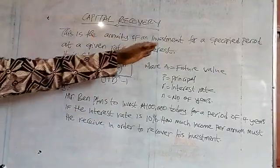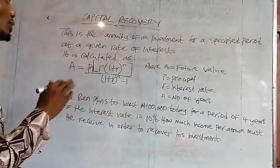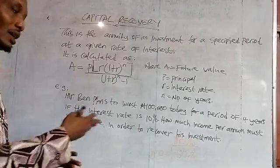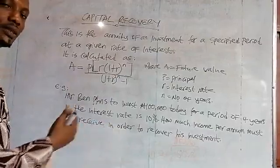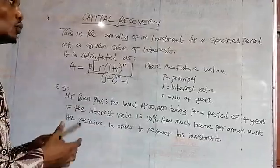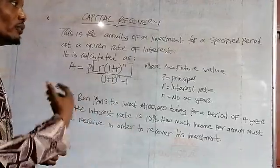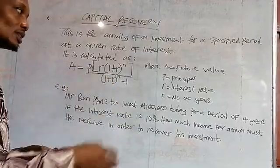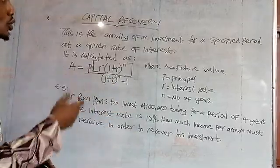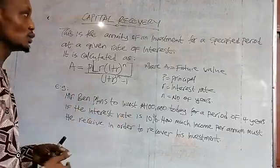Capital recovery is the annuity of an investment for a specified period at a given rate of interest, on which there will be interest. So we want to know how much we will be receiving over the period of time, at a regular interval, in order to recover what we have invested, which in the long run will yield interest.